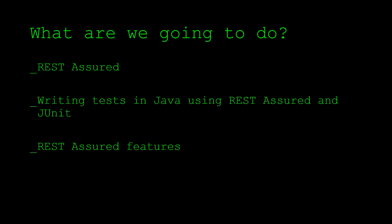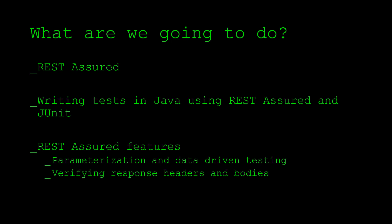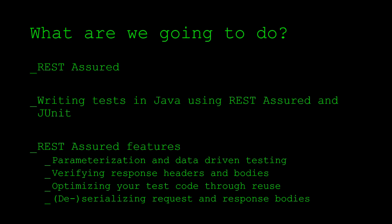We're going to take a look at a number of REST Assured features, such as how to apply parameterization to create data-driven tests, how to verify response headers and response bodies, how to optimize your REST Assured test code through reuse, and how to apply deserialization to work with request and response bodies that can be created from Java objects.